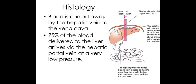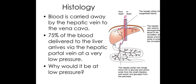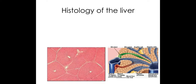The liver has one blood supply that leaves, and this is carried away in the hepatic vein into the vena cava, which is then taken back to the heart. This blood will be under a lower pressure due to the network of capillaries in the liver, which increases the cross-sectional area of the blood supply and therefore decreases the pressure involved.